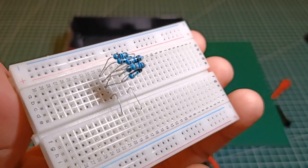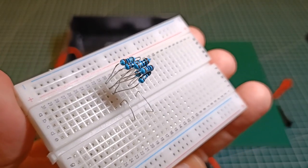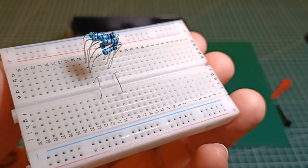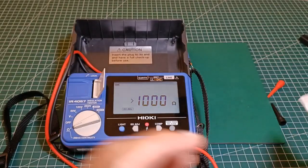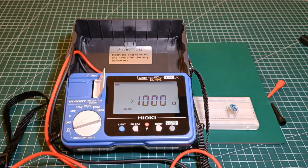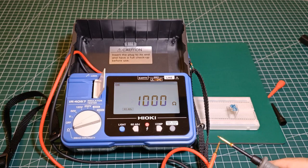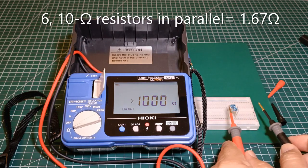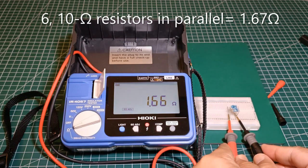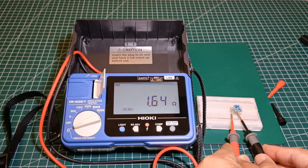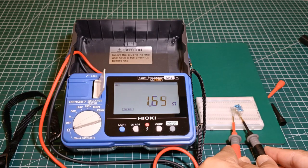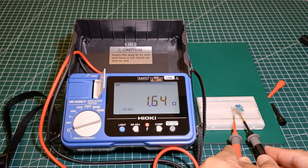This time I have managed to connect six 10 ohm resistors in parallel, and the equivalent resistance of this should be around 1.67 ohms. 1.64 ohms, and I think that's acceptable.